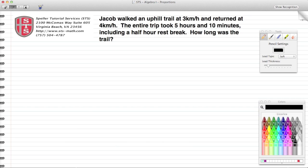Welcome back to Speller Tutorial Services. Today we're going to continue with a fractional equation word problem. The problem is stated above: Jacob walked an uphill trail at 3 kilometers per hour and returned at 4 kilometers per hour.